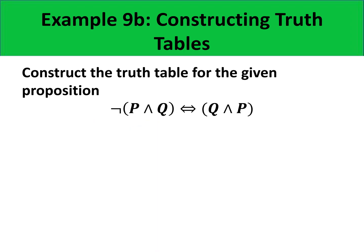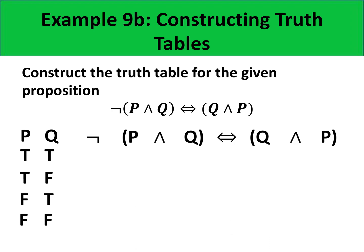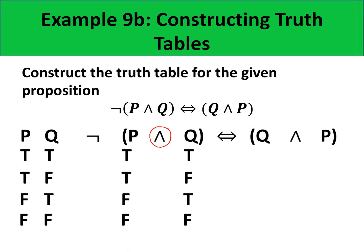For the second illustration, since there are two propositional variables, there are again four rows in the truth table. In this example, we shall evaluate the conjunction of P and Q first. Copying the values of P and Q and applying the conjunction, we get true, false, false, false. Recall that in conjunction, if there is one false, the value of the conjunction is false.